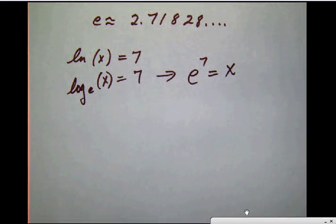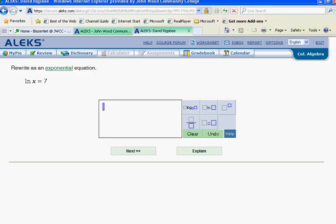So we will go back over here to Alex. And what we will do then is we will simply put e to the 7th. And so we can hit this button here. We will put in there the e. We will raise that to the 7th power. And we will say that that is equal to x. And should be good to go.